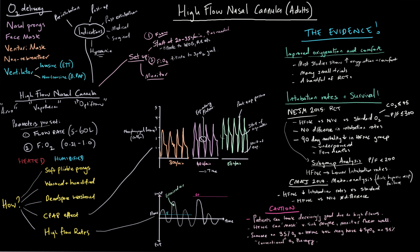I'll finish with a word of caution: patients can look deceivingly well when on high flow devices, so high flow nasal oxygen can mask some quite sick patients. It's important to pick the patients you want to monitor and who are at risk of deteriorating. For example, someone on 40 liters per minute at 35% FiO2 — if you switched them to a regular oxygen device at the same FiO2 there's a good chance they'd desaturate, because that flow rate really matters. Thanks very much — see you in the next video.